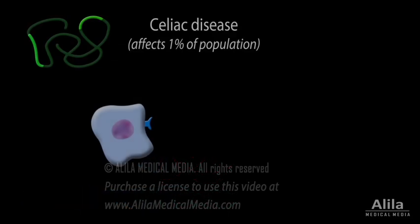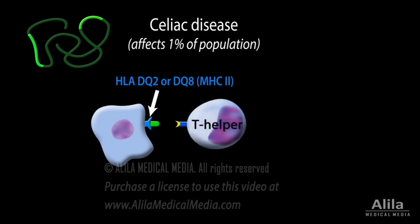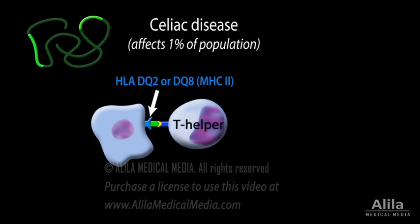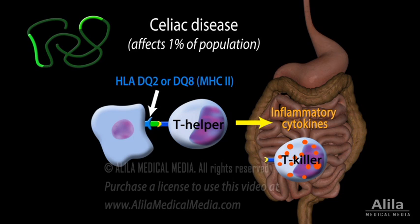People with celiac disease usually inherit a genetic predisposition to the disease. They have certain receptors that bind strongly to the epitopes and alert the immune system, specifically T helper cells, to their presence.